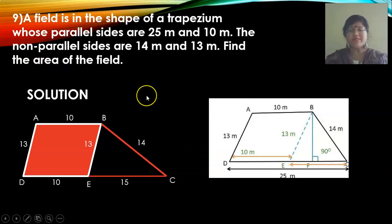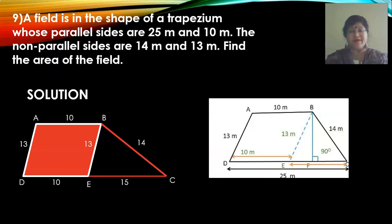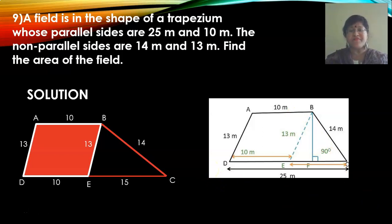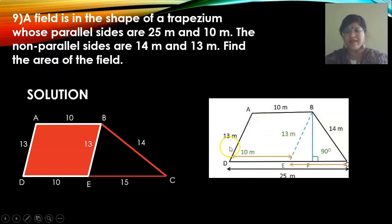This is question 9 from exercise 12.2 — a very important question. A field is in the shape of a trapezium whose parallel sides are 25 meters and 10 meters. The non-parallel sides are 14 and 13 meters. You have to find the area of the field. The diagram is not given in the textbook, so you have to draw it yourself. I have taken trapezium ABCD. DC is longer, so DC is taken as 25 meters and AB is equal to 10 meters.